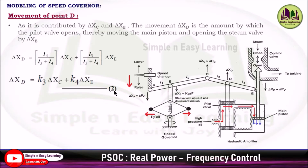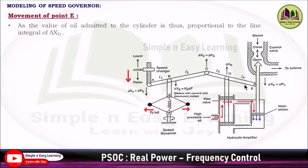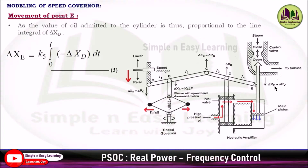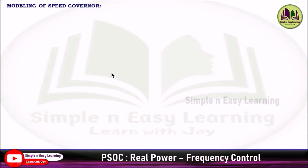Movement of point E: the value of oil admitted into the cylinder is proportional to the line integral of del_Xd. High-pressure oil is considered, which is why we take the line integral of del_Xd. So del_Xe, the main piston movement, equals K5 × ∫₀ᵗ (−del_Xd) dt, where K5 is the proportionality constant. Take this as Equation 3.